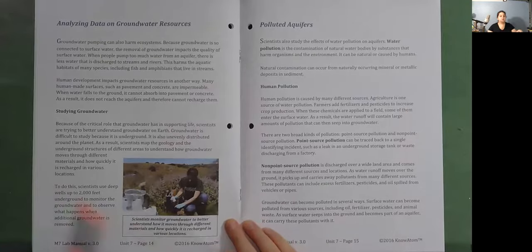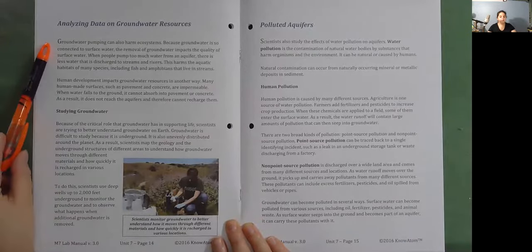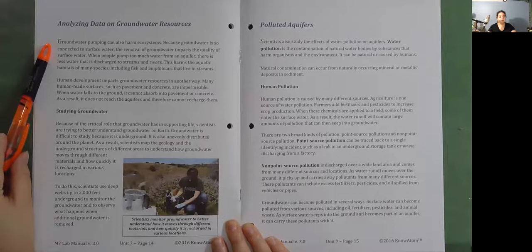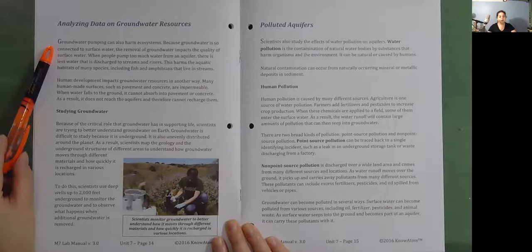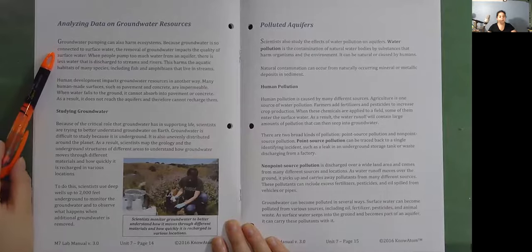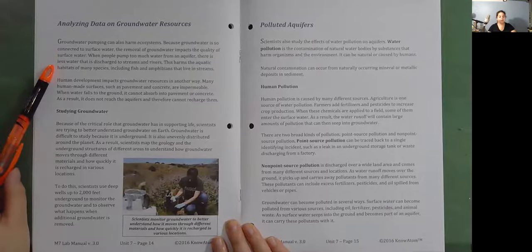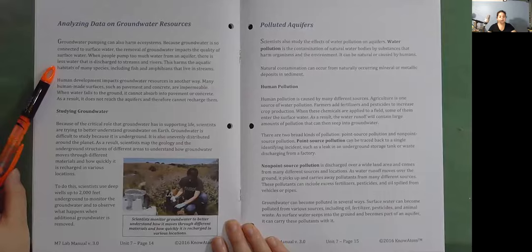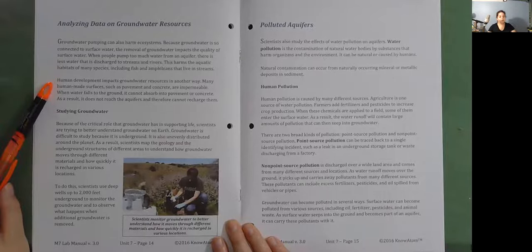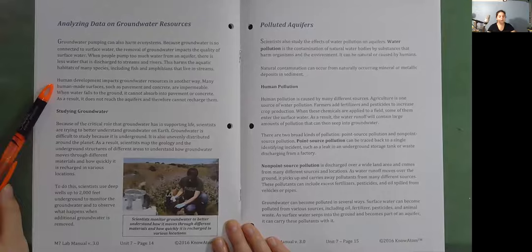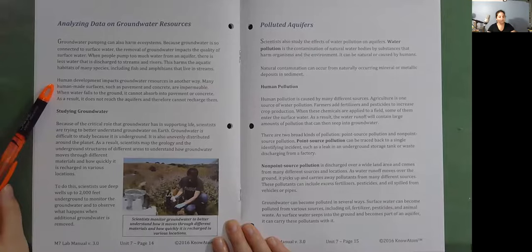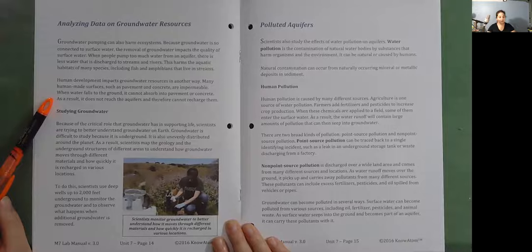Analyzing data on groundwater resources. Groundwater pumping can also harm ecosystems. Because groundwater is so connected to surface water, the removal of groundwater impacts the quality of surface water. When people pump too much water from an aquifer, there is less water that is discharged to streams and rivers. This harms the aquatic habitats of many species, including fish and amphibians, that live in streams. Human development impacts groundwater resources in another way. Many human-made surfaces, such as pavement and concrete, are impermeable. When water falls to the ground, it cannot absorb into pavement or concrete. As a result, it does not reach the aquifers and therefore cannot recharge them.